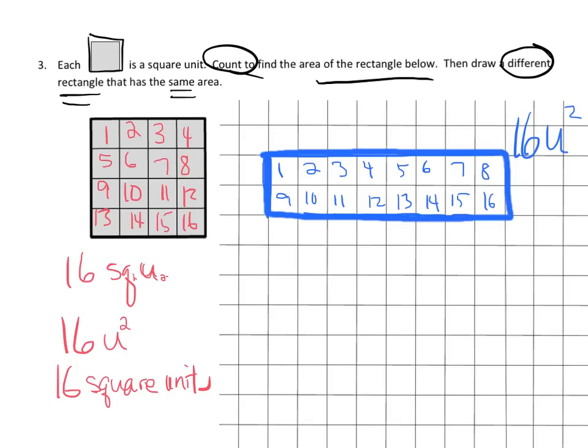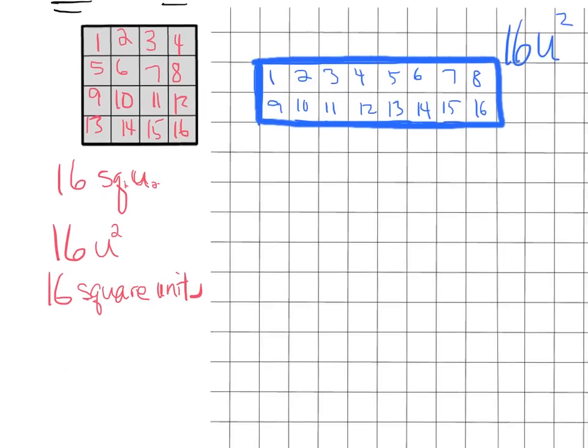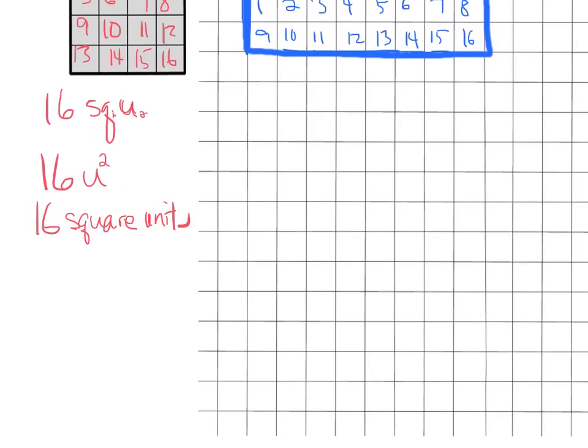Now students might have done one that's going up and down. All right. So, and that's okay, too. They could have done this. And then 1, 2, 3, 4, 5, 6, 7, 8, right here. They could have done this one, which is 8 by 2, which is 16. It's up to them.